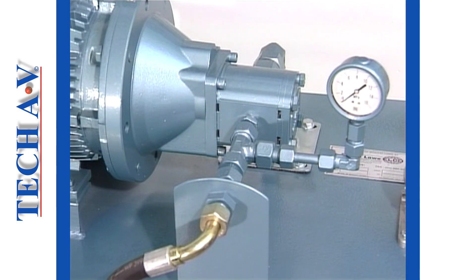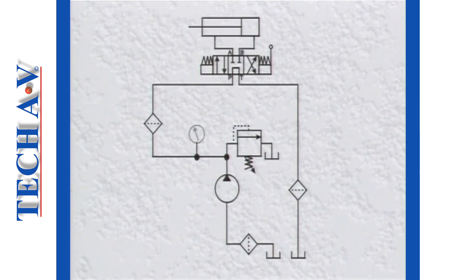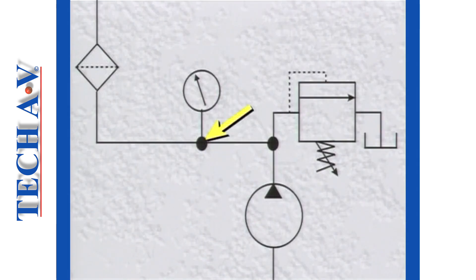As our system features a pressure gauge, we shall include this symbol on our diagram. Note that the pressure gauge is connected into the pressure line. A line connection is shown on a diagram with a solid dot.